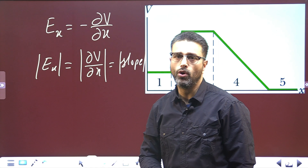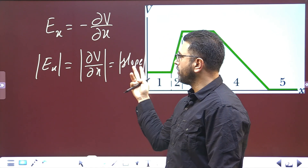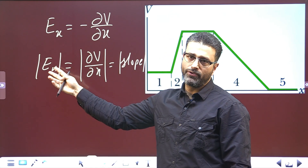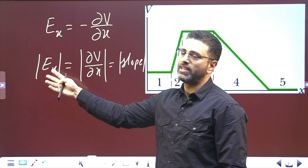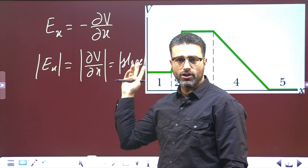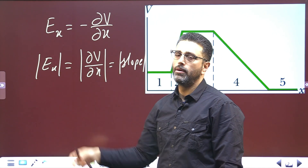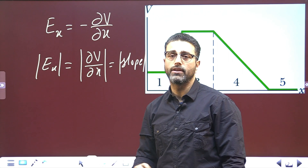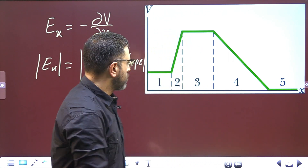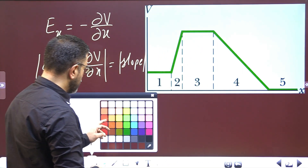The slope of the graph determines the magnitude of the field. Greater the slope of the graph, greater is the magnitude of the field. Lesser the slope, lesser is the magnitude. If the slope of the graph is 0, then the magnitude of the electric field is 0. So let's analyze these 5 regions.